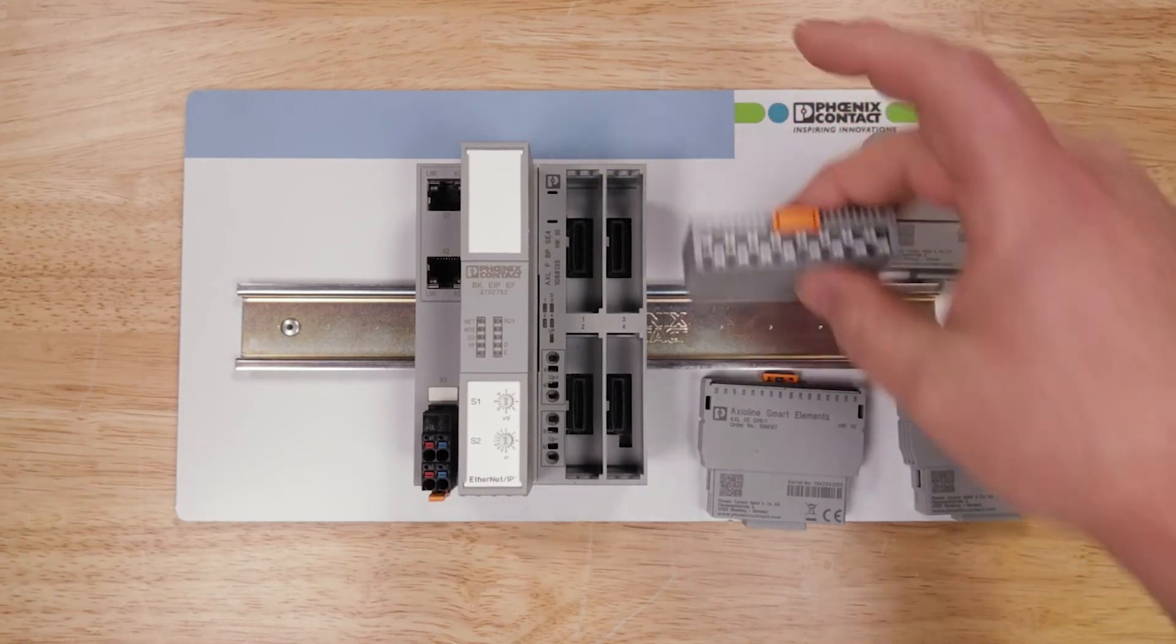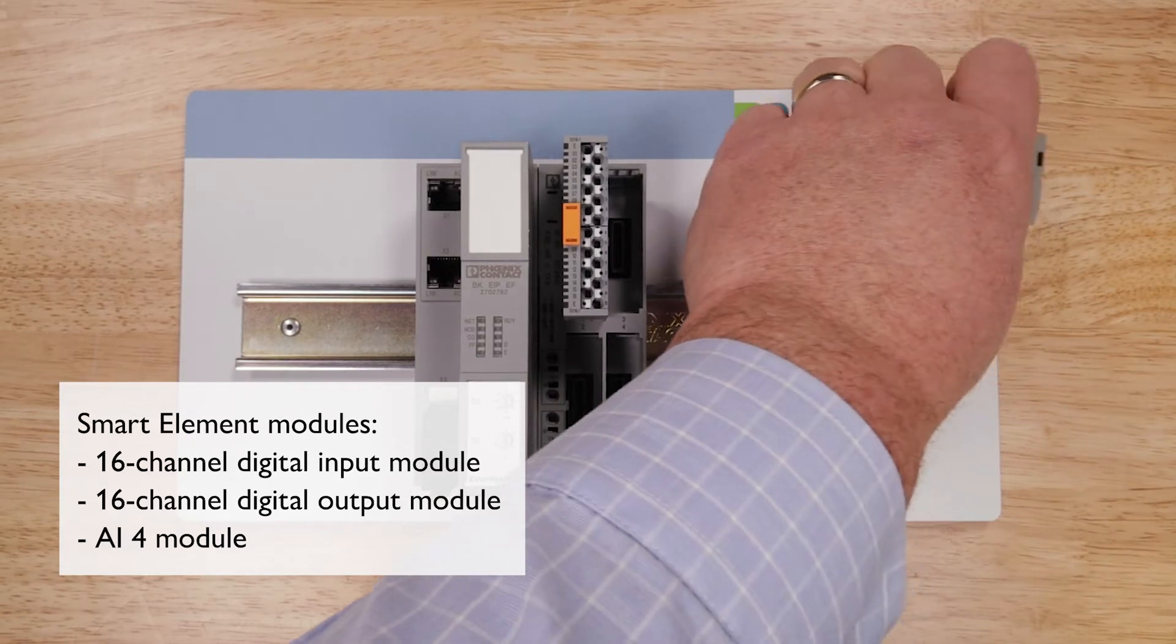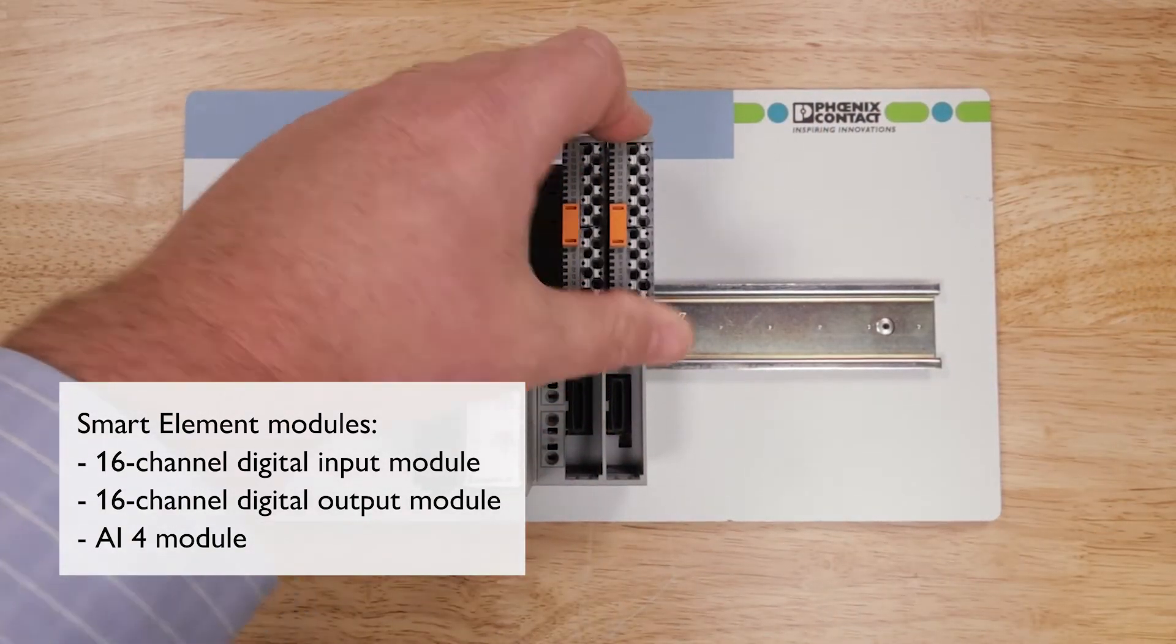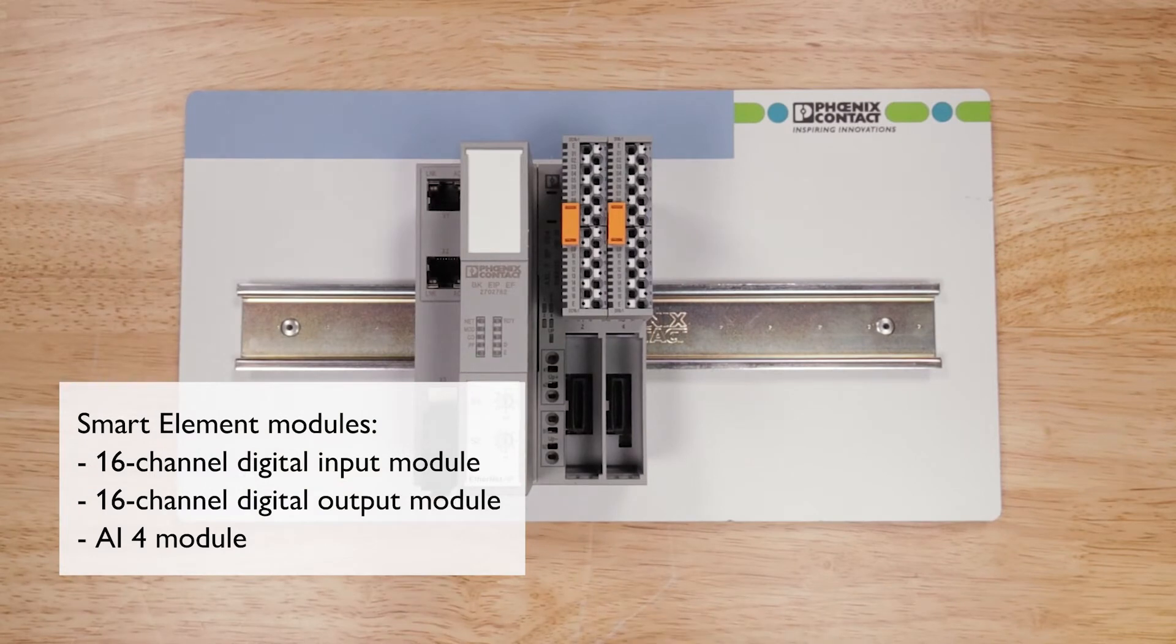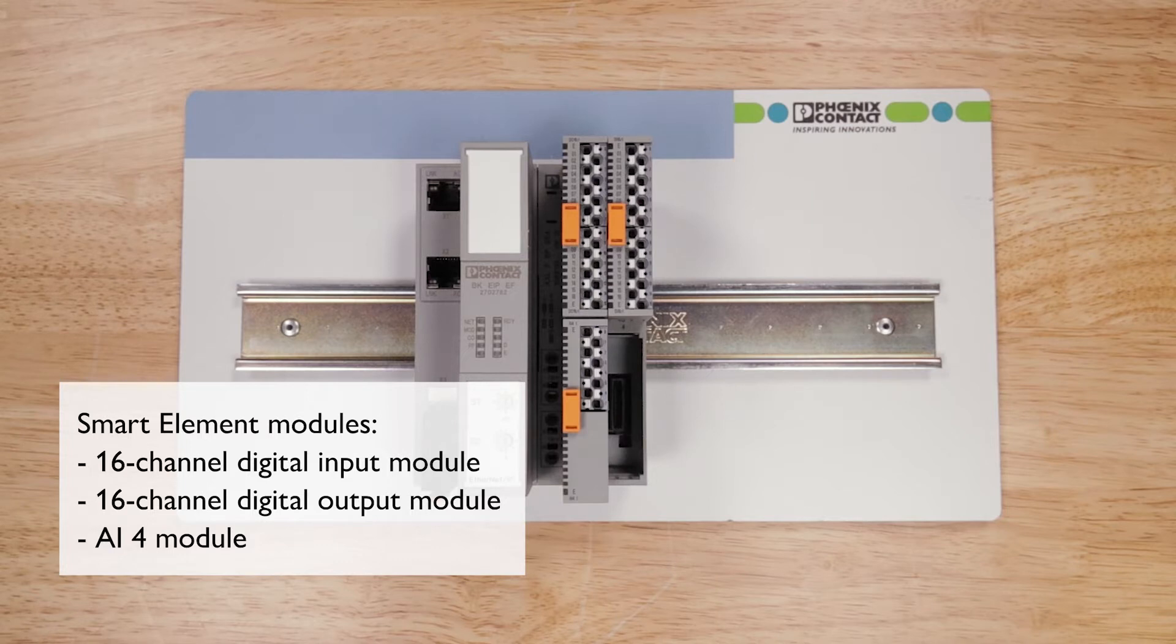For the Smart Elements, I have two digital modules, a 16-channel digital input module and a 16-channel digital output module. You can see I simply snap them onto the rail. And I have an AI4 module, so I have 16 digital inputs, 16 digital outputs, and 4 analog inputs.